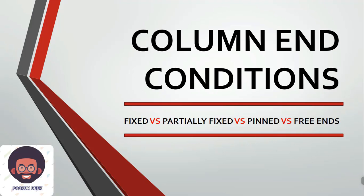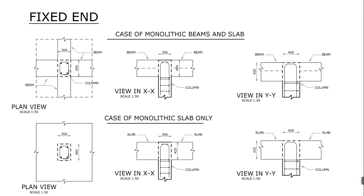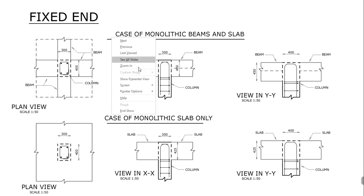Today's video is going to be a slideshow presentation, but we're also going to be going into ProCon Pads for better illustrations whenever we need to explain a concept. The first thing we need to look at is the fixed end of a column. The end of a column is considered to be fixed when it is connected monolithically to beams or slabs that are deeper than the column dimension in the relevant plane. The keywords are: it has to be monolithic, and the beams or slabs have to be deeper than the column in the relevant plane.